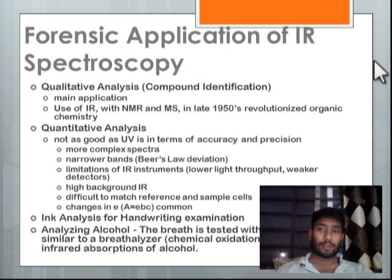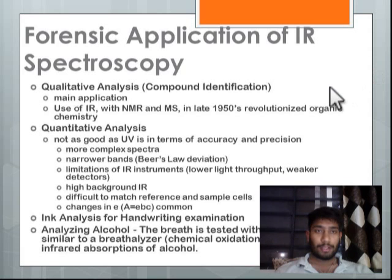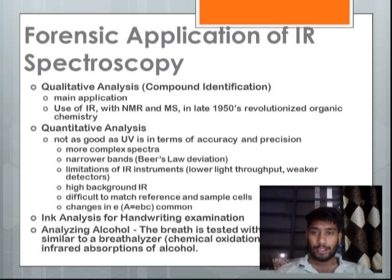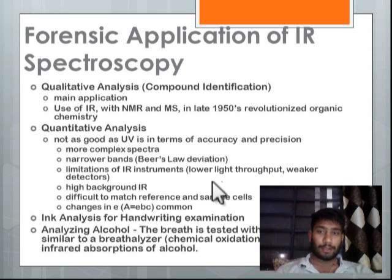Forensic applications of IR spectroscopy: IR spectroscopy is very important in forensic science. It is used for qualitative analysis and compound identification — any compound found at a crime scene can be identified and its amount determined. For quantitative analysis, it is not as accurate as UV spectroscopy due to more complex spectra, narrower bands, instrument limitations, and high background IR. Ink analysis is also done for handwriting examination. Additionally, IR spectroscopy can analyze alcohol content in a person's breath via a breath analyzer.